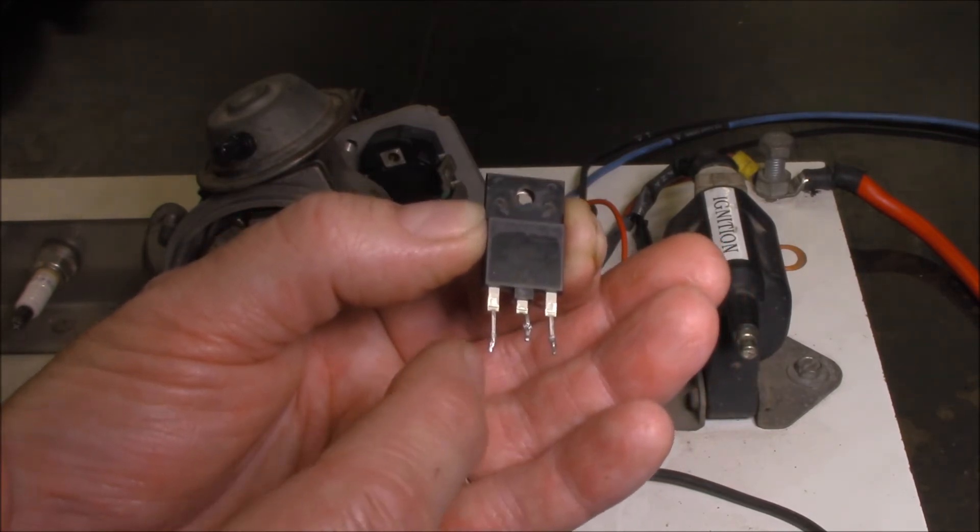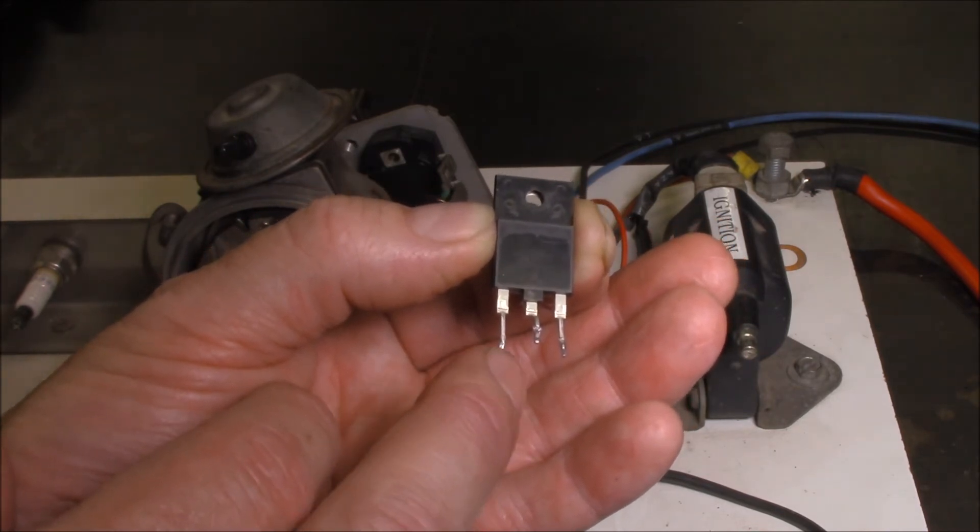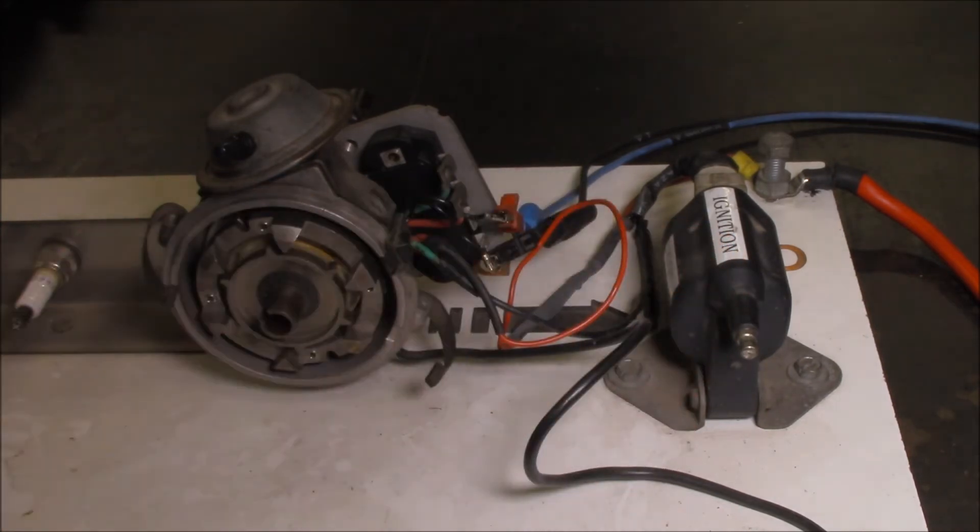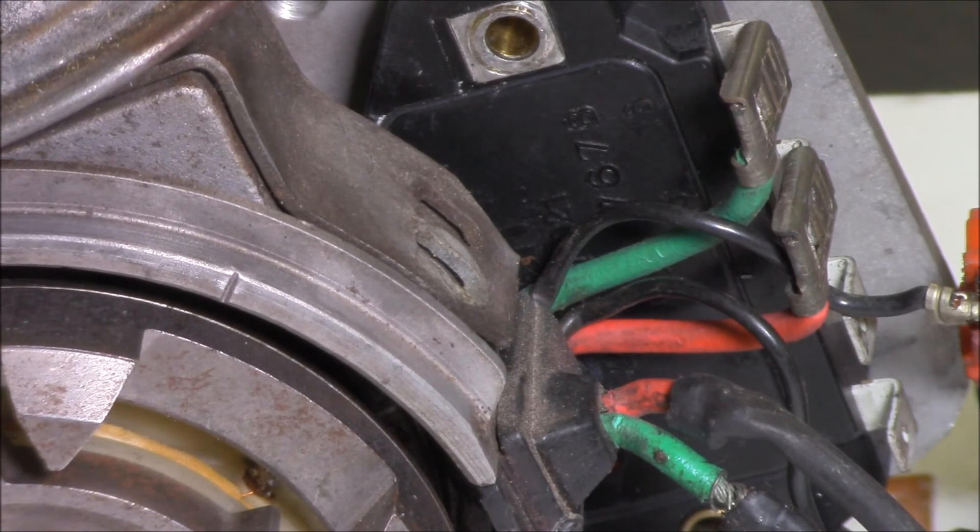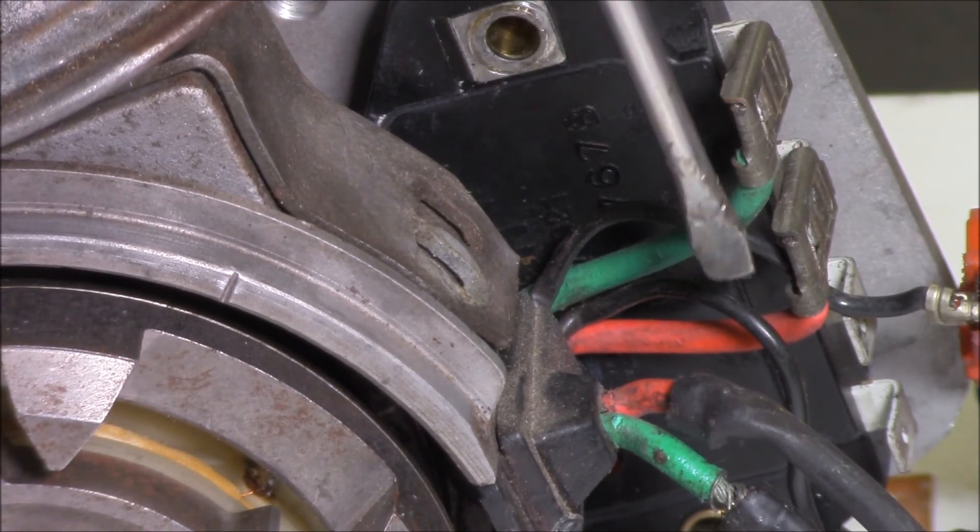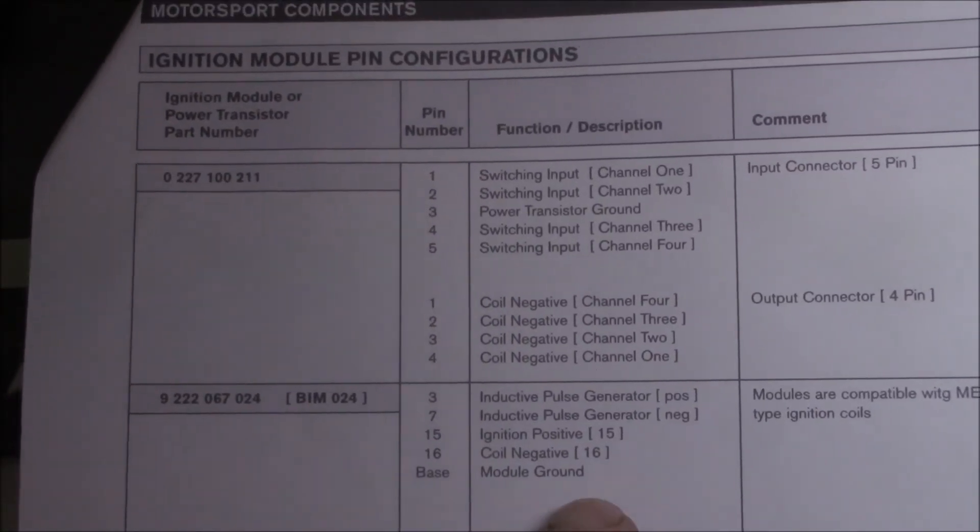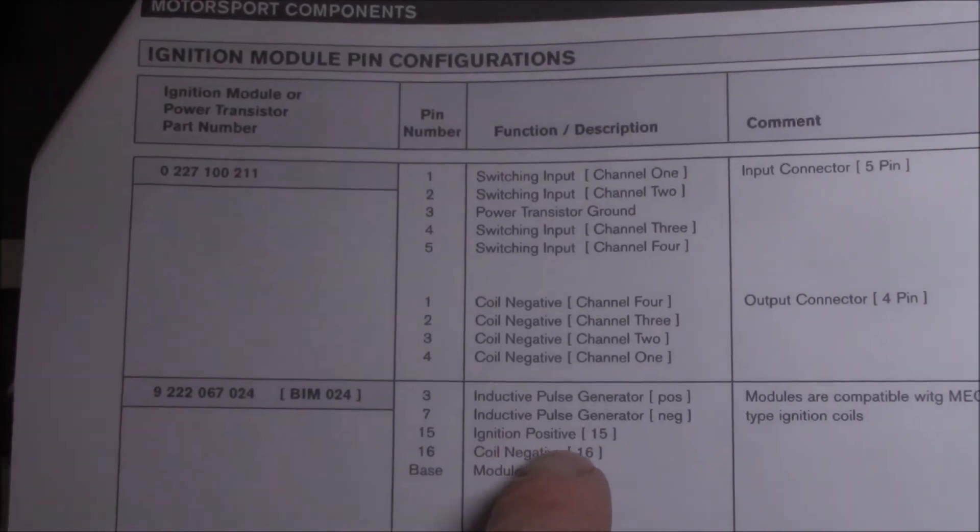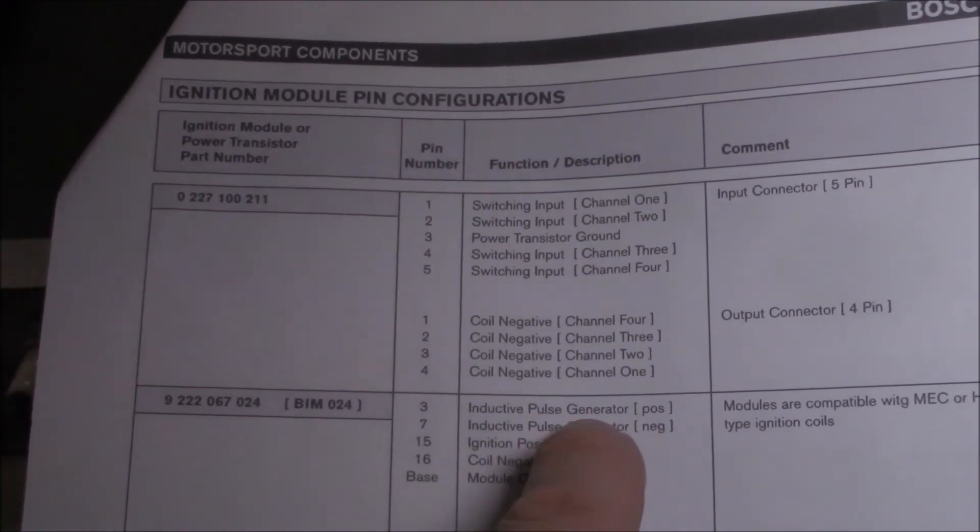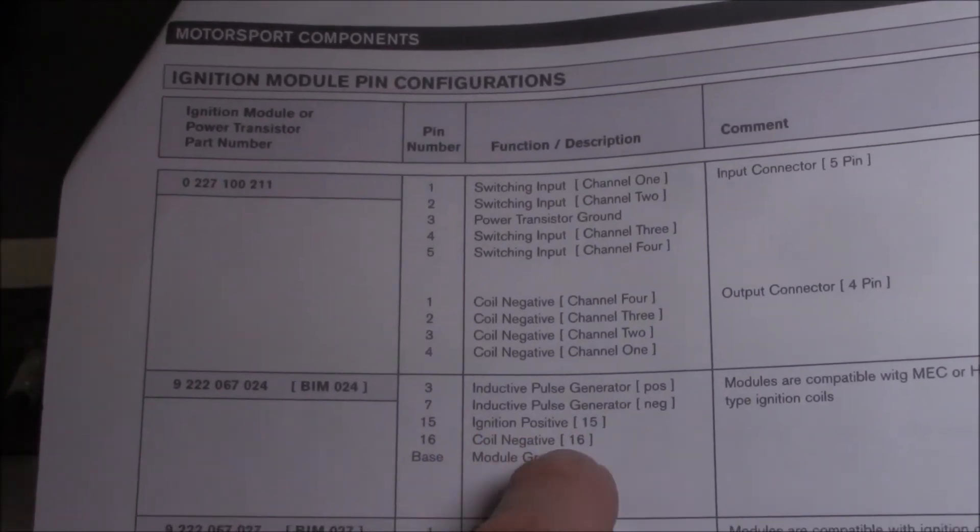A MOSFET is a tiny bit different. It has a gate, a drain and a source. The drain could be compared to a pin 30 on a relay. The source could be compared to a pin 87 on a relay. And the gate could be a combined effort of pin 85 and 86. High current passes through these two by switching on this little fellow here. You can see that numbers are listed on the module itself. According to our ignition module pin configuration chart here, ignition positive is 15 and coil negative is 16. Once the internal MOSFET is triggered by this inductive pulse generator, we have a positive on one side of the coil and the negative is being triggered on the ignition coil.